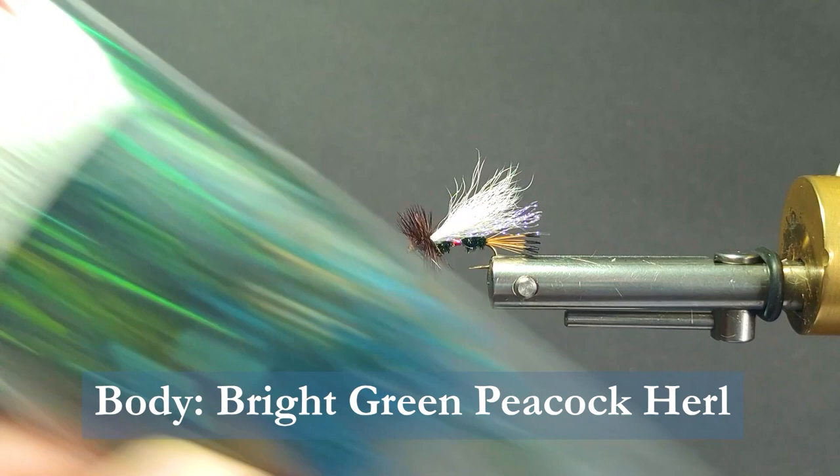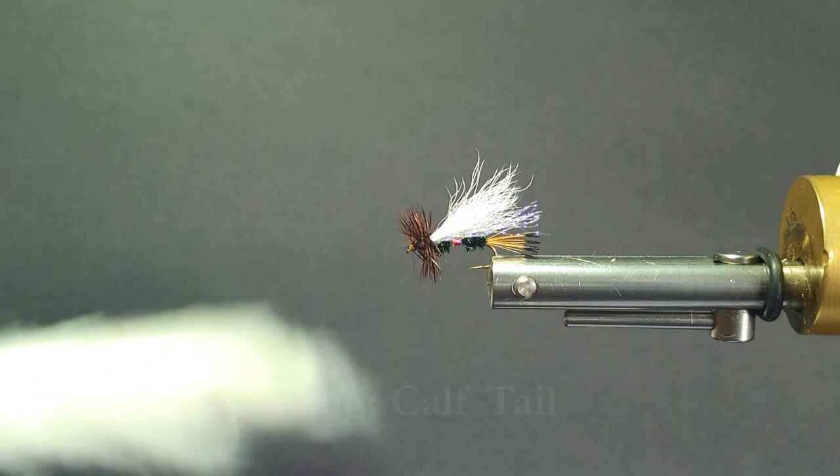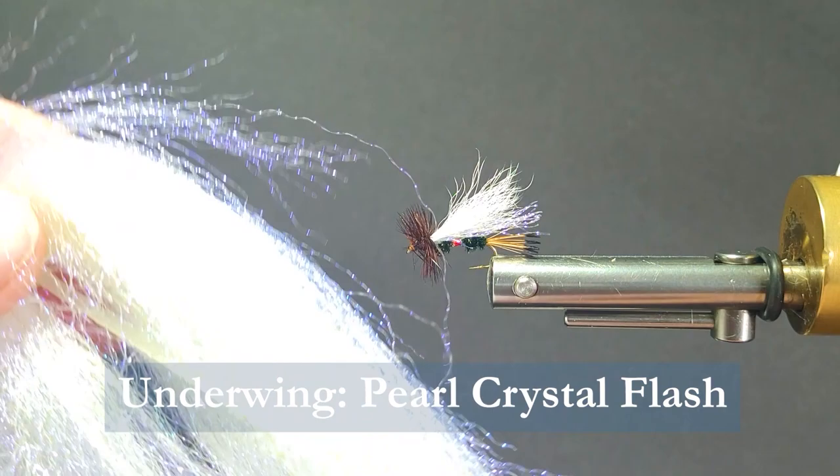For the wing, I'm going to be using some calf tail. I like using the more straighter tail down the bottom. And for the underwing, what I add on here is some UV very soft crystal flash, very fine. It's a UV, so it adds a lot to the patterns you can see on there.